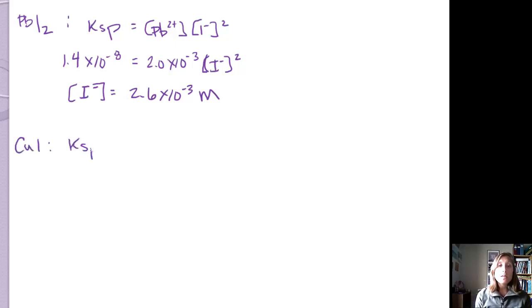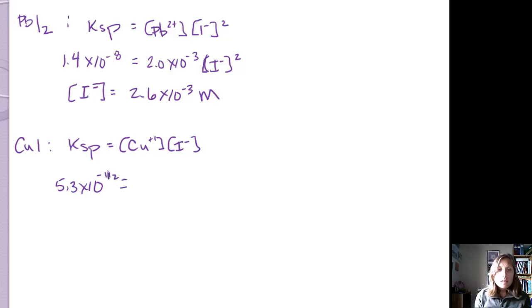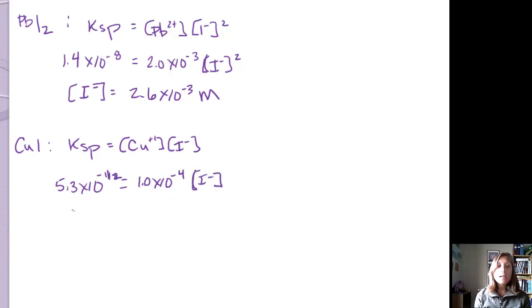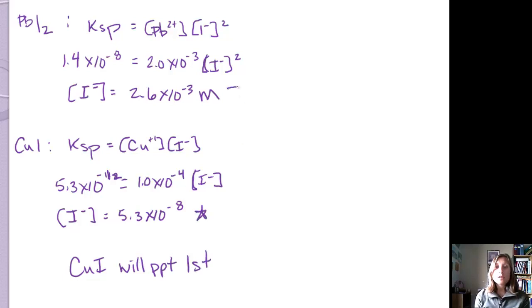For copper iodide, Ksp = [Cu⁺][I⁻] = 5.3×10⁻¹². With [Cu⁺] = 1×10⁻⁴ M, solving gives [I⁻] = 5.3×10⁻⁸ M. Beyond this concentration, copper iodide will precipitate. Because the required iodide concentration is much lower for copper iodide than for lead iodide, copper iodide will precipitate first. These are the iodide concentrations necessary to begin precipitation of each salt.